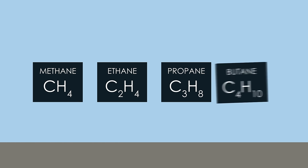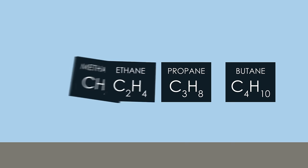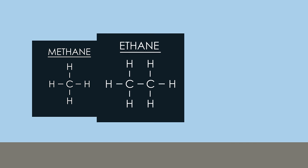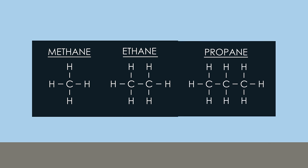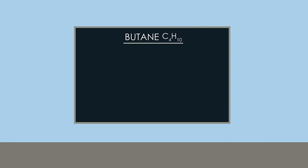Here are the formulae of the first four alkanes: methane, ethane, propane and butane. And here are the structural formulae of the first three. Pause the video and draw out the structural formula for butane.